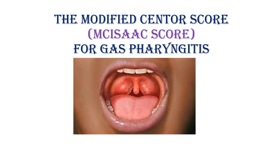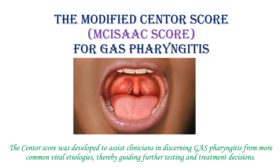Today I will explain the modified Centor score, or McIsaac score, for group A streptococcal pharyngitis. The Centor score was developed to assist clinicians in distinguishing group A streptococcal pharyngitis from more common viral etiologies, thereby guiding further testing and treatment decisions.